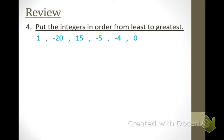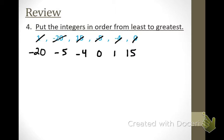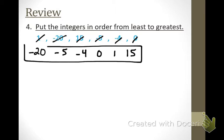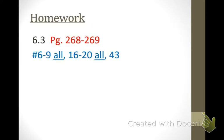Final review for today: put these integers in order from least to greatest. What's the tiniest number? Negative 20. What's next? Negative five, then negative four, then zero. Notice: if zero is in the middle of a number line, all your negative numbers will always be to the left of zero, and all positive numbers will always be to the right. This is tonight's homework — as normal, there are only ten problems.